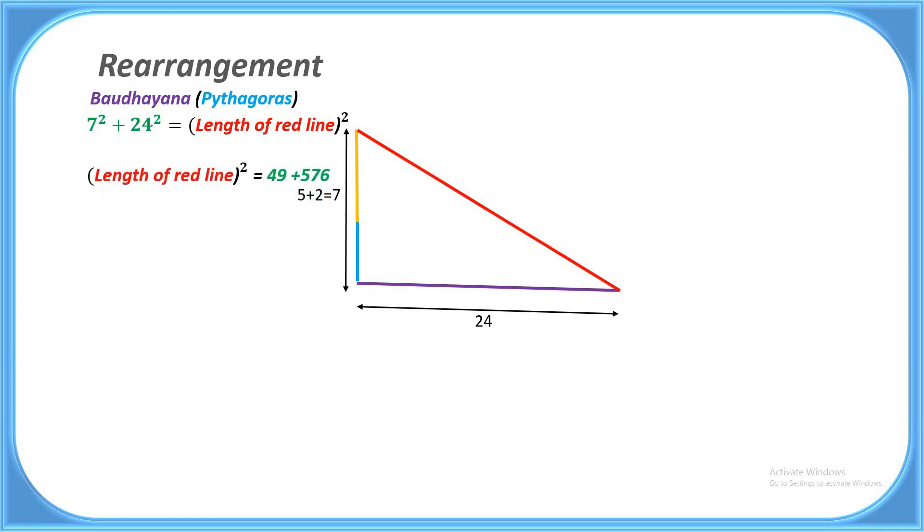Now length of the red line squared equal to 49 plus 576. Length of the red line squared equal to 625. Take square root both sides and we will get length of the red line equal to 25, and that's our answer.